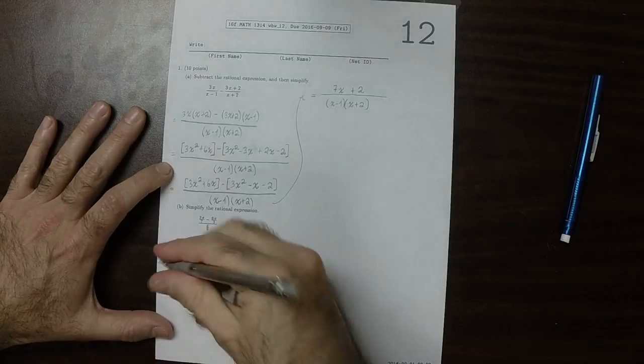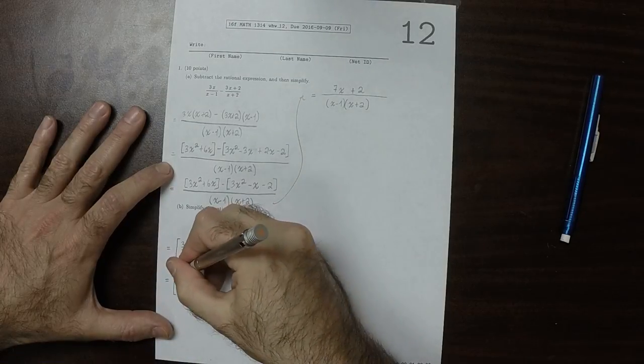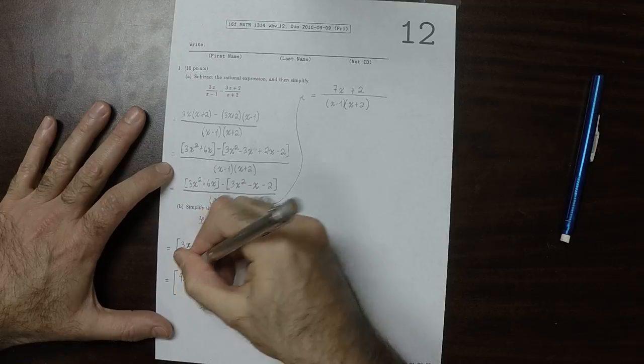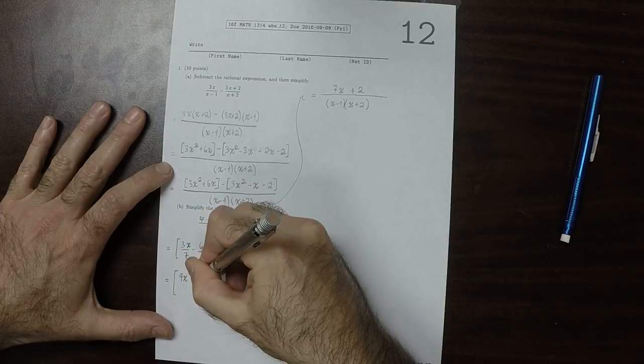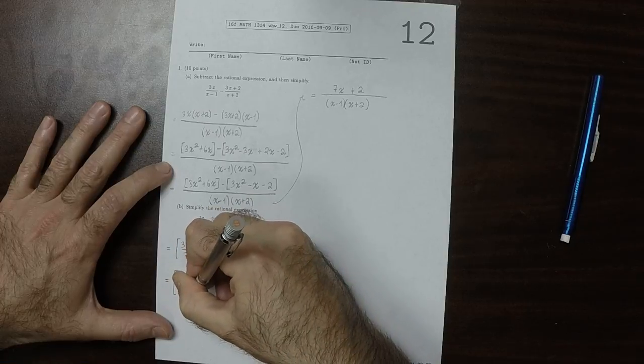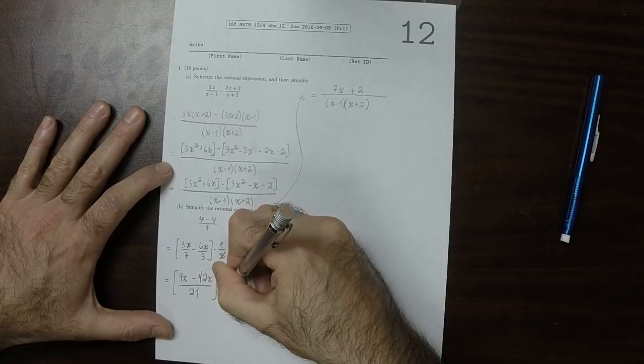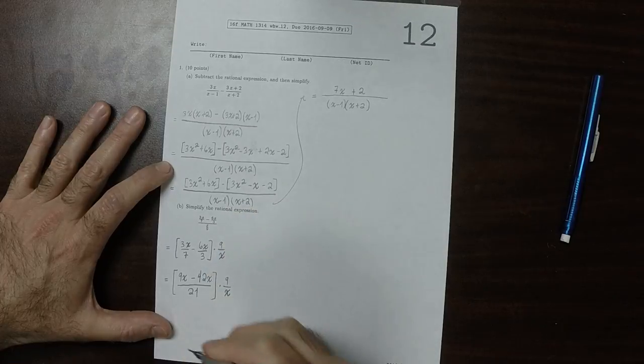Now within the square parentheses, I'll cross multiply to get 9x minus 42x over 21. We're going to multiply by 9 over x. Now simplify this.